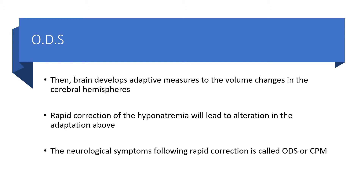If there is rapid correction of the hyponatremia, that will lead to alteration in the adaptation and we will be dealing with neurological symptoms following the rapid correction. That is collectively called osmotic demyelination syndrome, formerly known as central pontine myelinolysis.